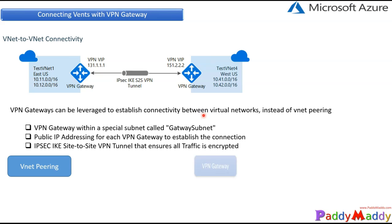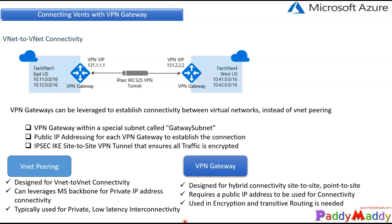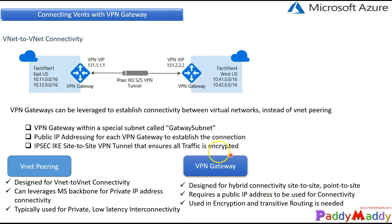As discussed in a theoretical lecture, we are comparing why you would choose VNet peering over a VPN Gateway. If you have regulatory standards requiring transitive routing with encryption, you would go for VNet-to-VNet connectivity. If you don't need encryption and require low latency with communication staying within the Microsoft Azure backend network, you would go for VNet peering.